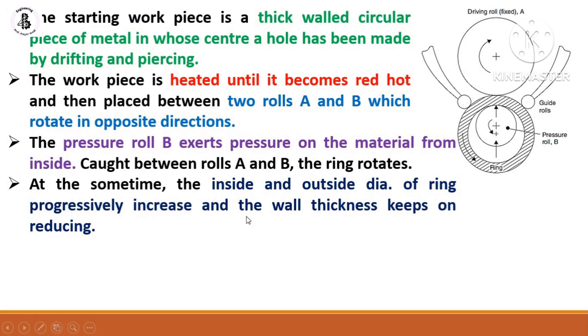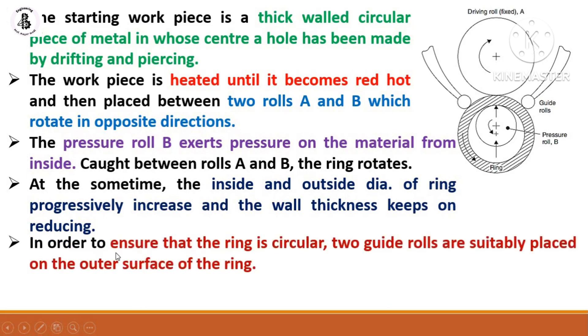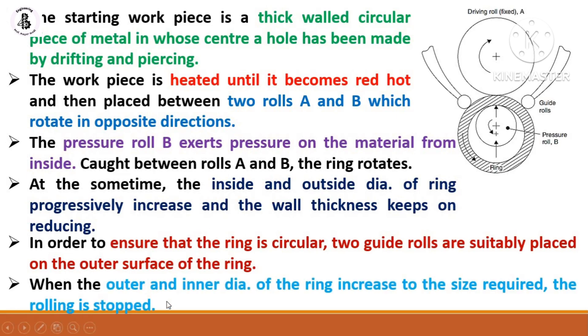At the same time, the inside and outside diameter of the ring progressively increase and the wall thickness keeps on reducing. In order to ensure that the ring is circular, two guide rolls are suitably placed on the outer surface of the ring. When the outer and inner diameter of the ring increase to the size required, the rolling is stopped and you will get your product.